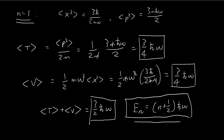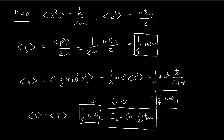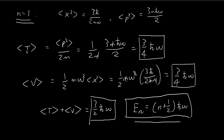One extra thing to notice is that the expected values of kinetic energy and potential energy are evenly distributed — half the energy goes to kinetic energy and half to potential energy. Both terms are equal for n=0 and n=1, and this applies for all stationary states. David Griffiths actually proved in an earlier example that the energy distribution must be equal between kinetic and potential energy.